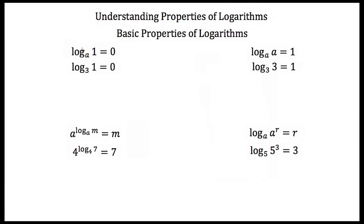The first property is that if we ever take the log of the number 1, that's always equal to 0. So the log of whatever base — it doesn't matter what the base is — of 1 is always equal to 0. For example, the log with a base of 3 of the number 1 is equal to 0. The natural log of 1 is also equal to 0.